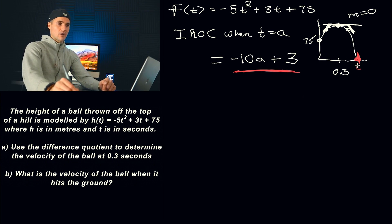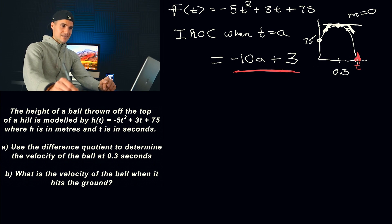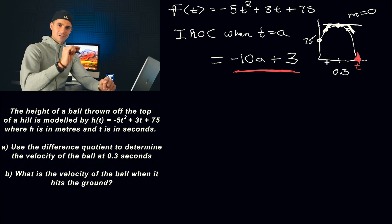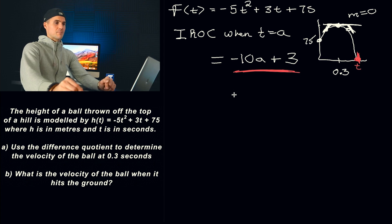Think about it like the ball going through the ground — at that split second when it hits the ground, what's the speed? You might wonder whether the instantaneous rate of change would be zero right when it hits, since it would bounce back up. Technically yes, but we're more so finding the velocity just before it hits the ground, so think of it as going through the ground.